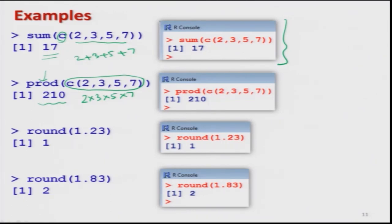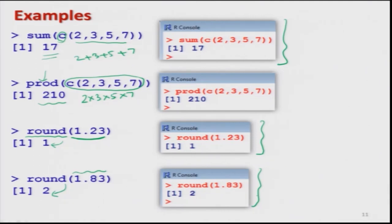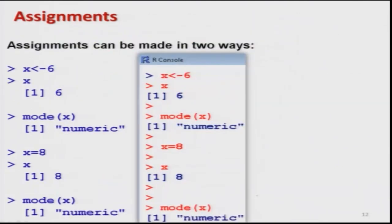To find the rounded value of 1.23, I use the round function with the value inside the bracket. The rounded value of 1.23 is 1, so the command gives 1, as shown in the screenshot. Similarly, the rounded value of 1.83 is 2 since it is more than 1.5. All these functions — sum, product, round — can be directly operated in R without any problem.